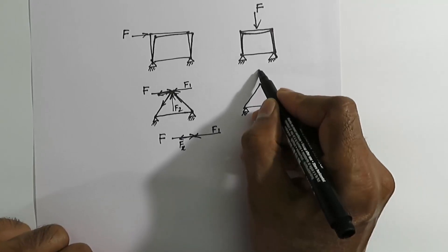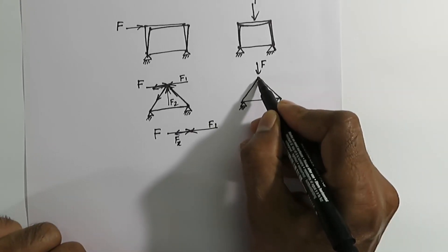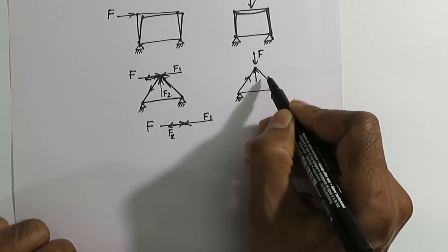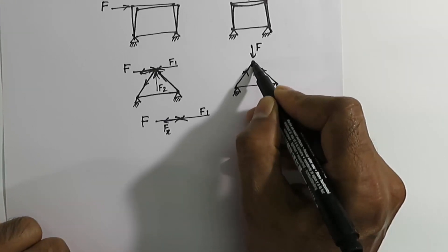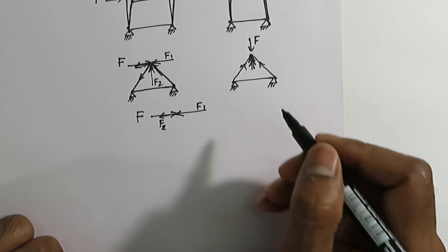Now if we apply the force vertically downward, in this case too, the reaction force will be in equilibrium with the applied force. Any distortion of the structure will be very minimum.